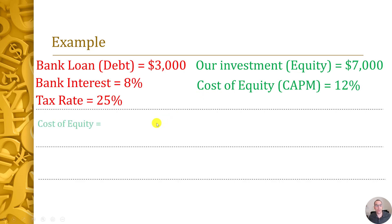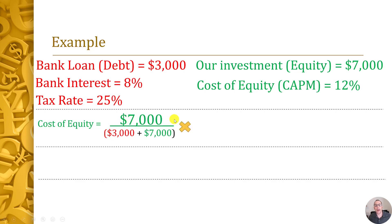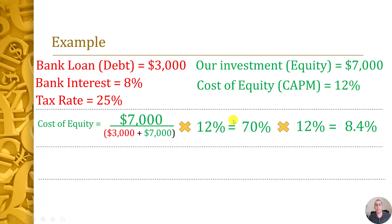First, let's calculate the weighted cost of equity. The weight of equity is $7,000 divided by ($3,000 + $7,000), which equals 70%. We multiply that by the cost of equity of 12%, giving us 70% × 12% = 8.4%. So our weighted cost of equity is 8.4%.